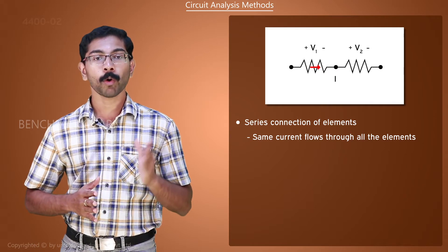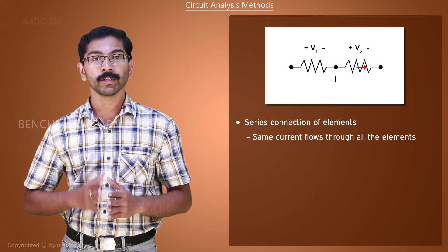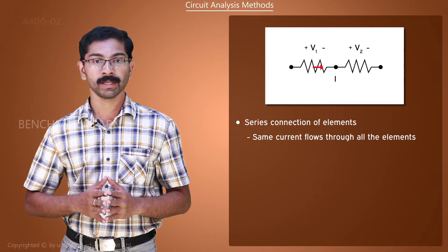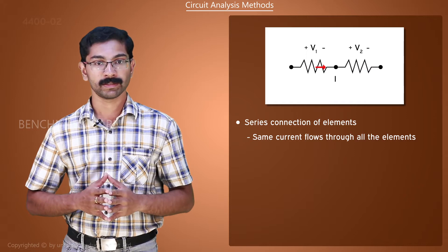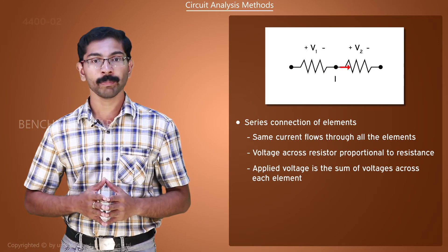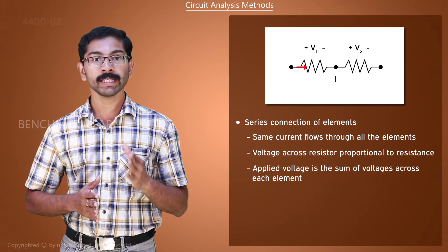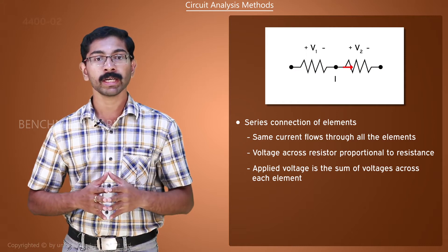Why? Because from Ohm's law, we know that the voltage drop across a resistor is equal to the product of current and resistance. As the current through the elements is the same, we can say that the voltage is directly proportional to the resistance.